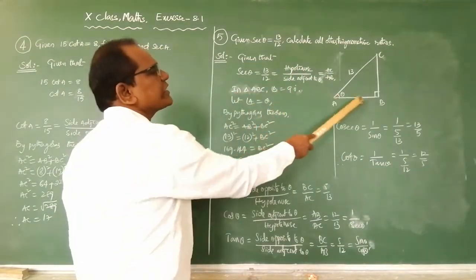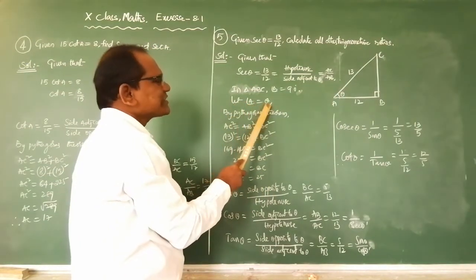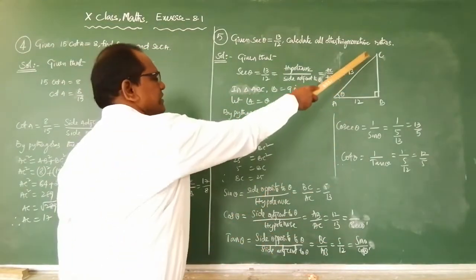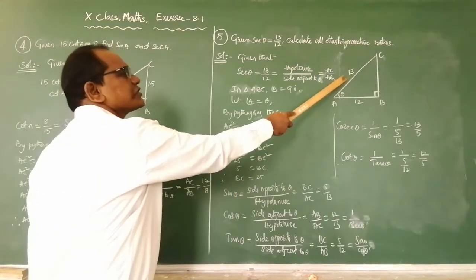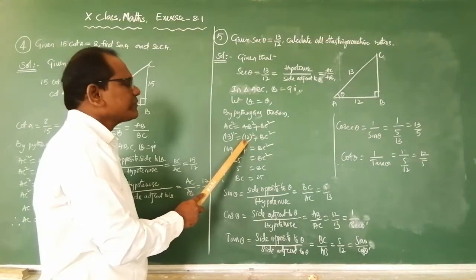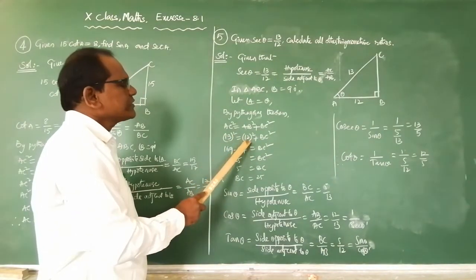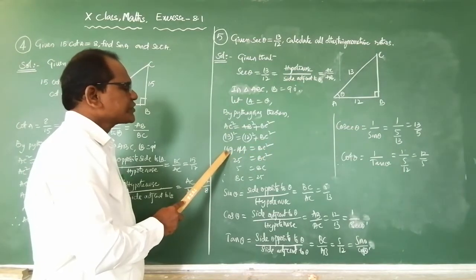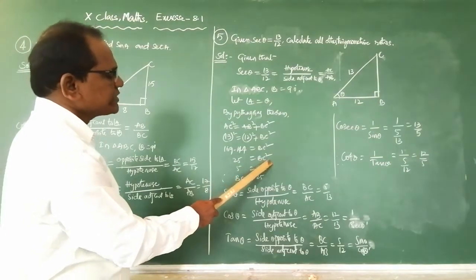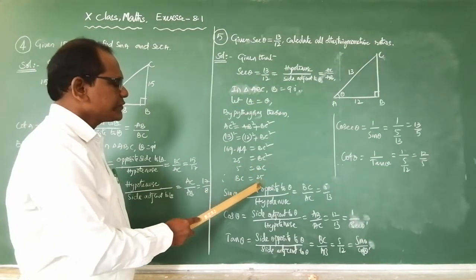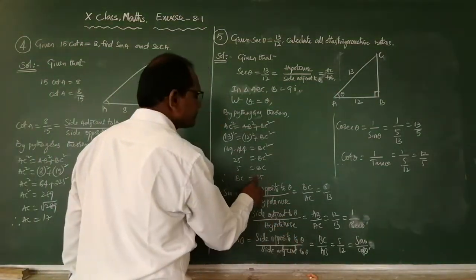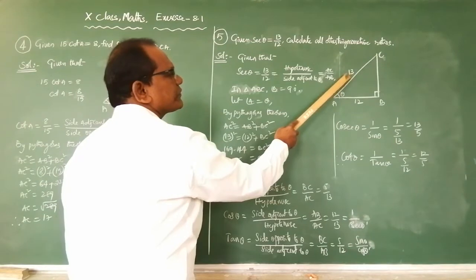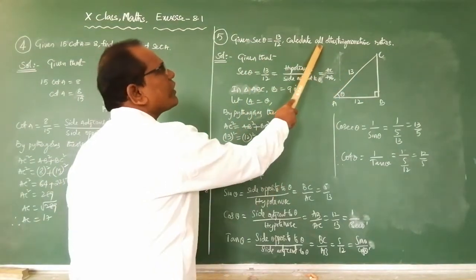We draw the diagram with angle A as θ. Using Pythagoras: AC squared equals AB squared plus BC squared. 13 squared equals 12 squared plus BC squared. 169 equals 144 plus BC squared. Therefore BC squared equals 25, so BC equals square root of 25, which is 5. BC equals 5.